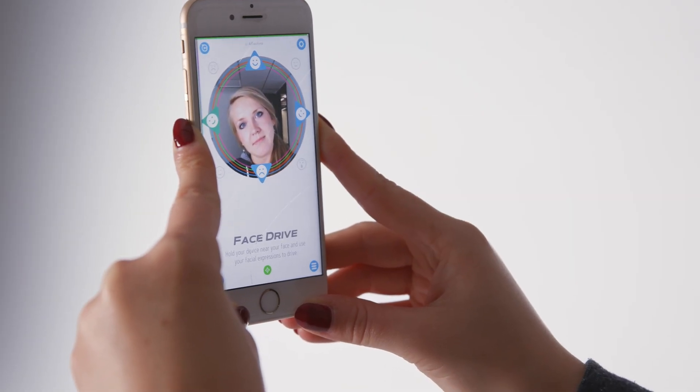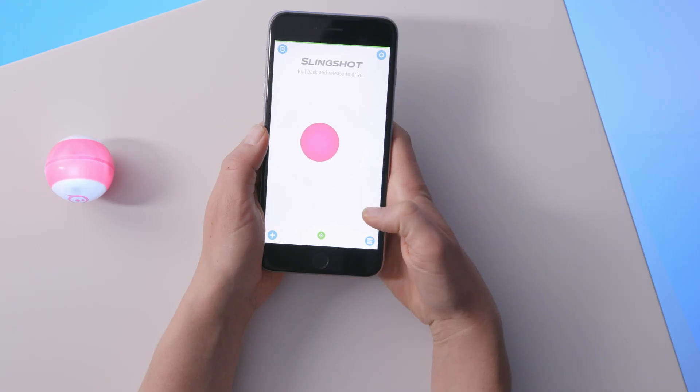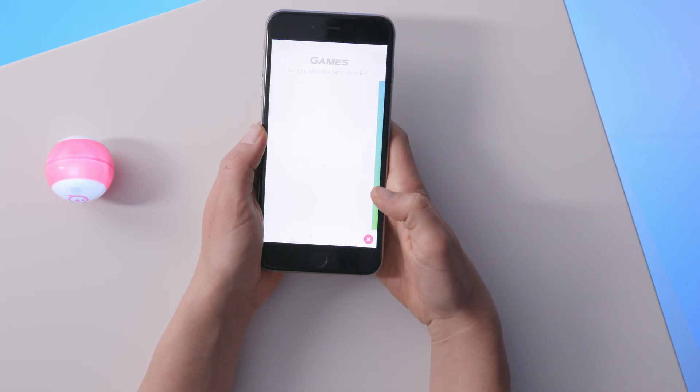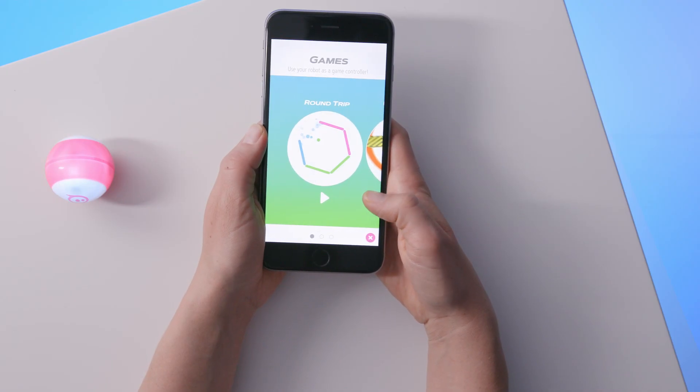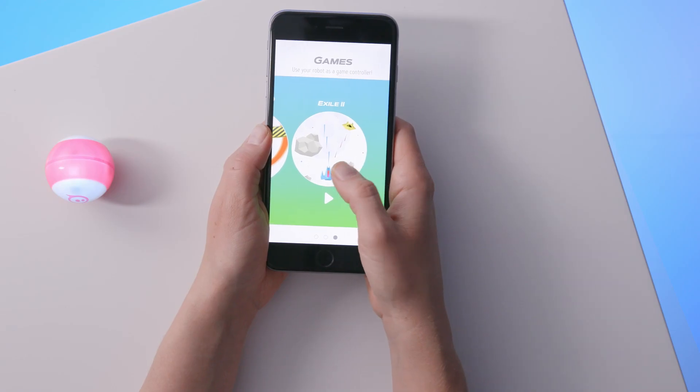Driving isn't all you can do with your Sphero mini. There are a bunch of mini games available in the app that use mini as a controller. Tap the icon in the bottom right of the screen to launch mini games and scroll through horizontally to see what is available. Each game will begin with a short tutorial to get you up to speed on using mini as a controller.